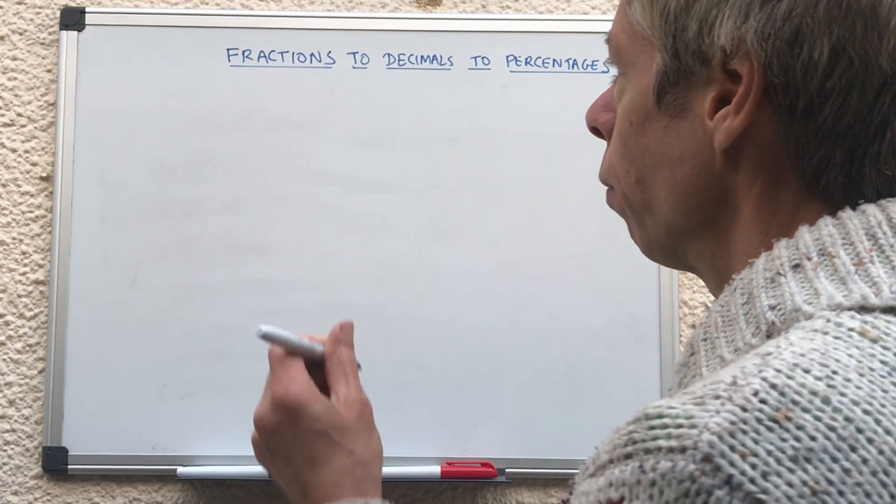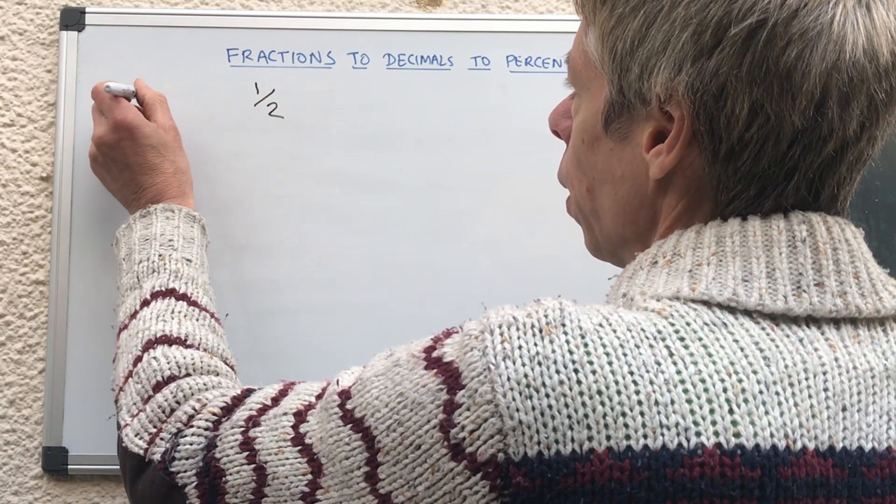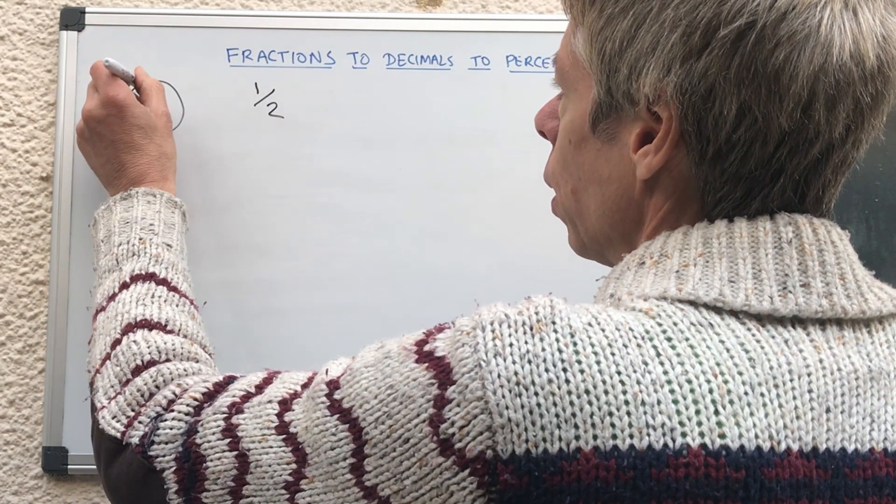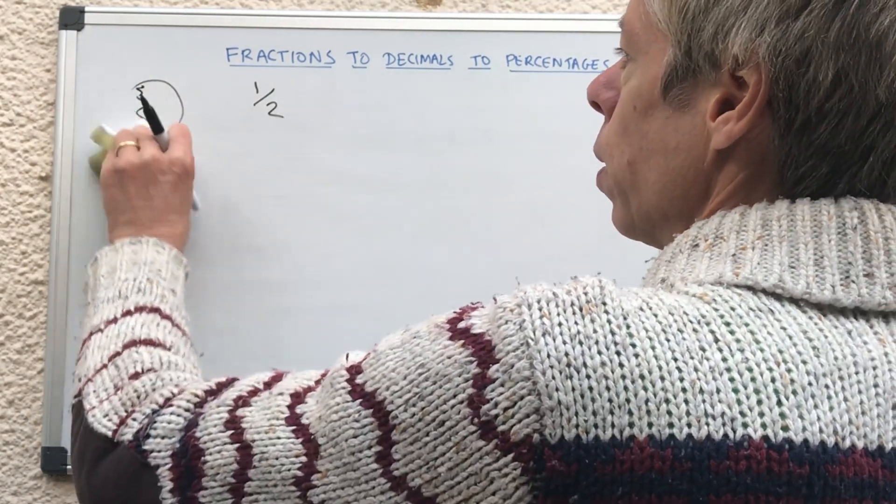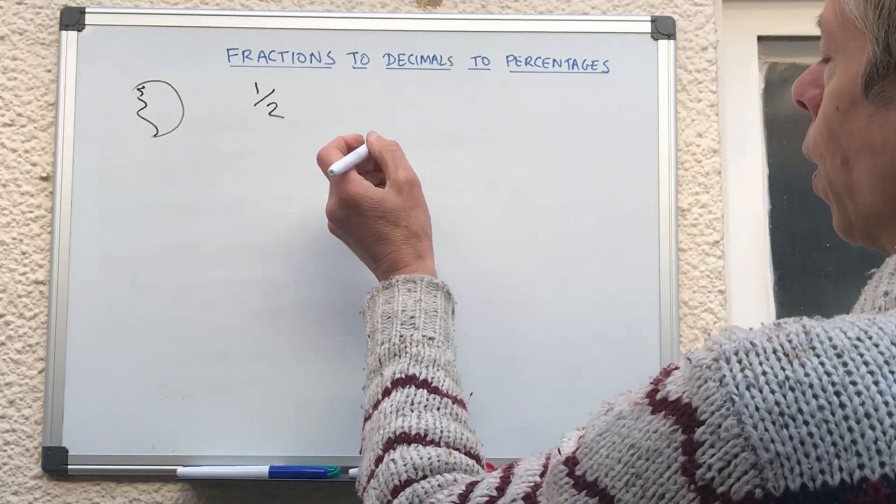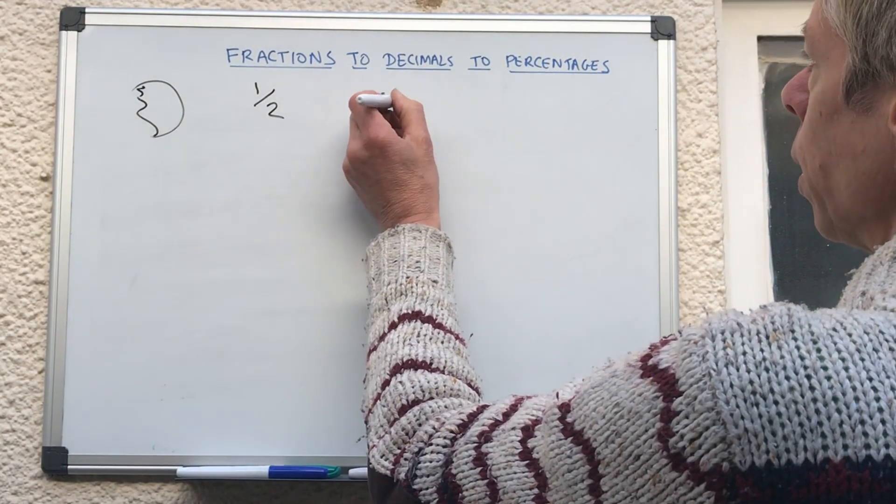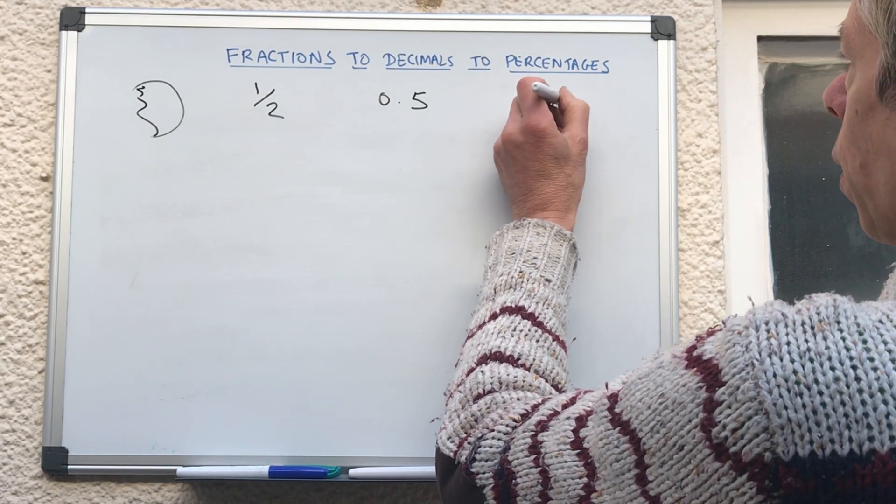So you've got the fraction as in a half, so obviously you've got your pizza, you eat half a bit, so you've got half left. So half of a pizza is the same as in a decimal 0.5 and as a percentage we know is 50%.